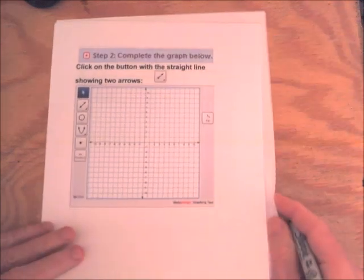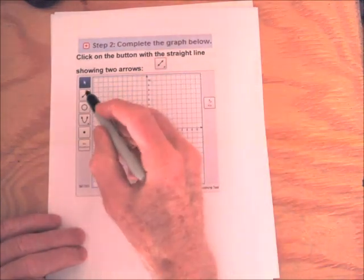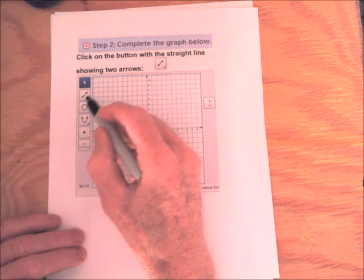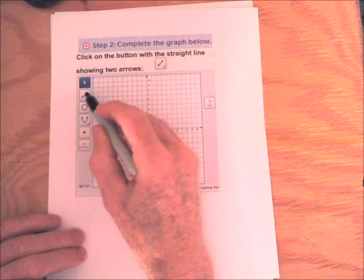And then we want to plot these points on the graph. We first of all want to click on the line with two arrows on it, the straight line with two arrows, that button there.